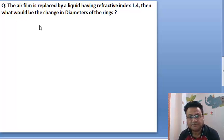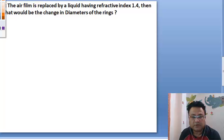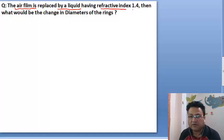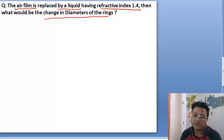Hello guys, let's do one more numerical on Newton's ring. The problem is: the air film is replaced by a liquid having refractive index of 1.4, then what would be the change in diameter of the rings?